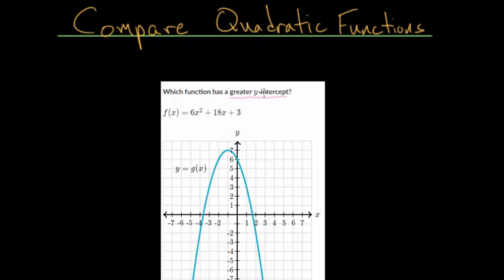To start this problem, let's look at the graph first and figure out what the y-intercept is. Remember, that's where the curve, this blue line, intersects this y-axis here. Or in other words, the y-intercept is when x is 0. So for this blue curve right here, you can see it intersects at a y value of 6. So now we know the y-intercept for g of x, but what would it be for f of x?